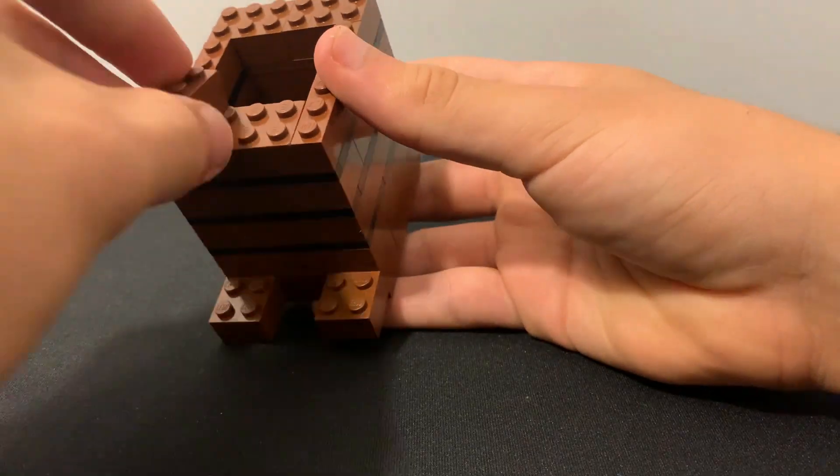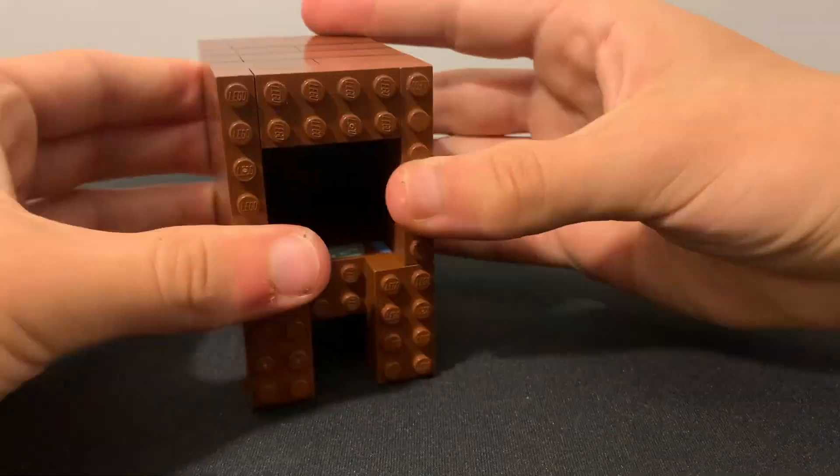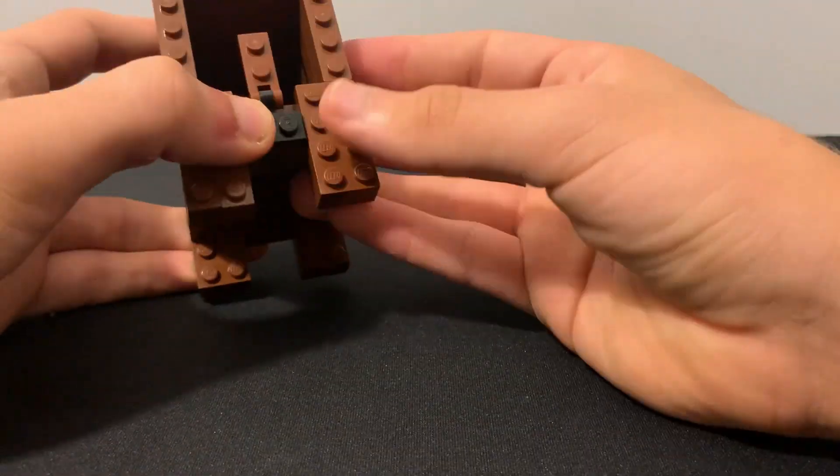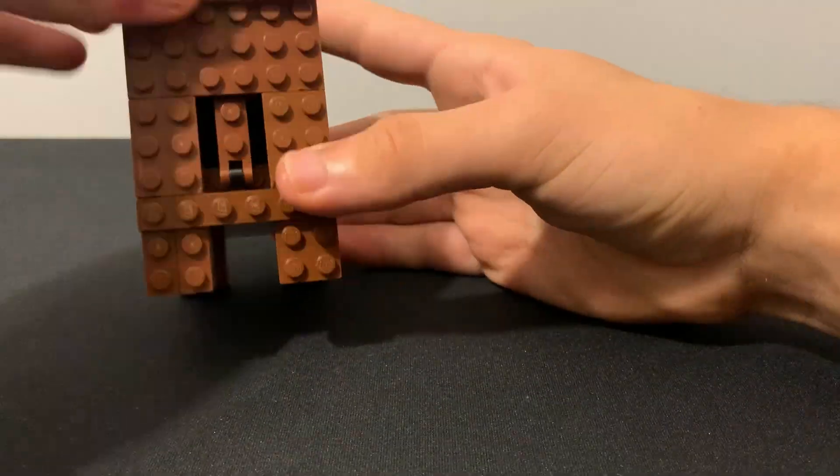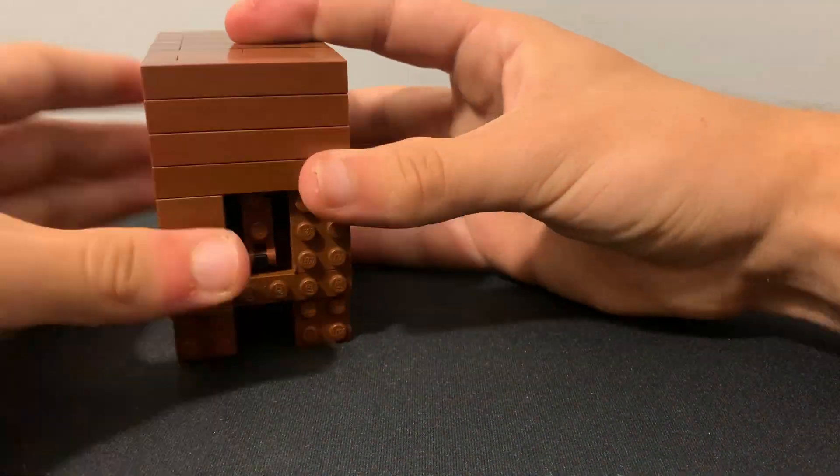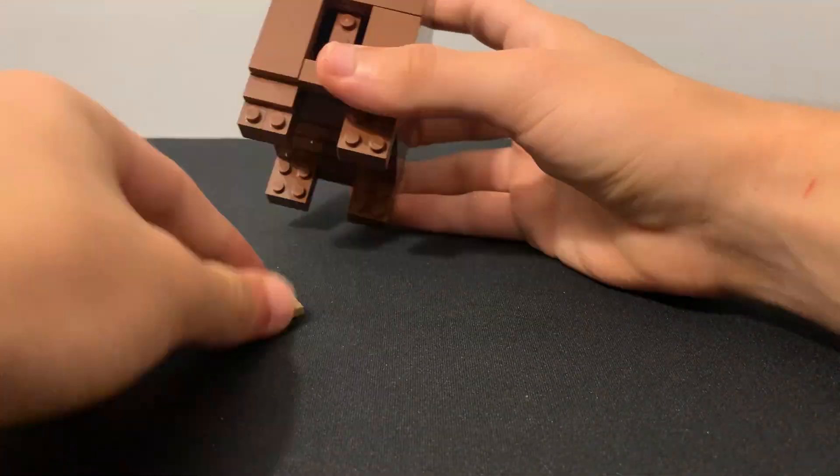I added in the legs here using 2x4 bricks. Then I started on the design for the head. First, I tiled off the rest of the remaining open space, including the legs.